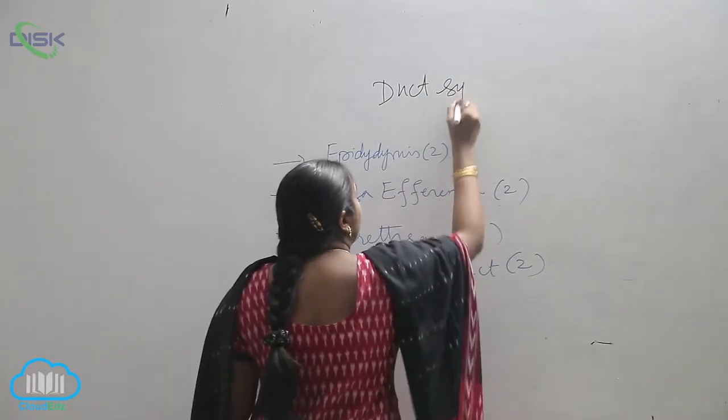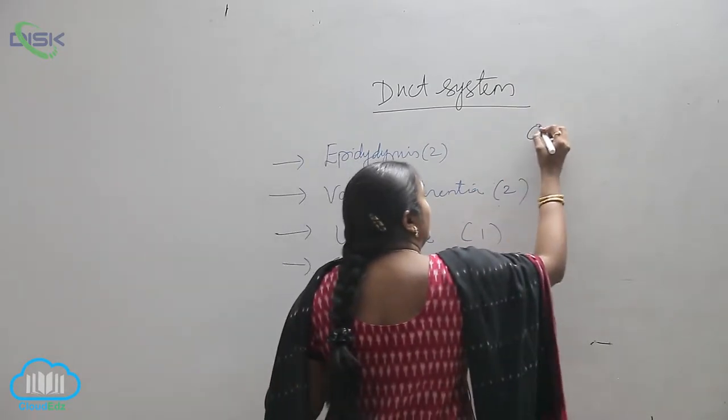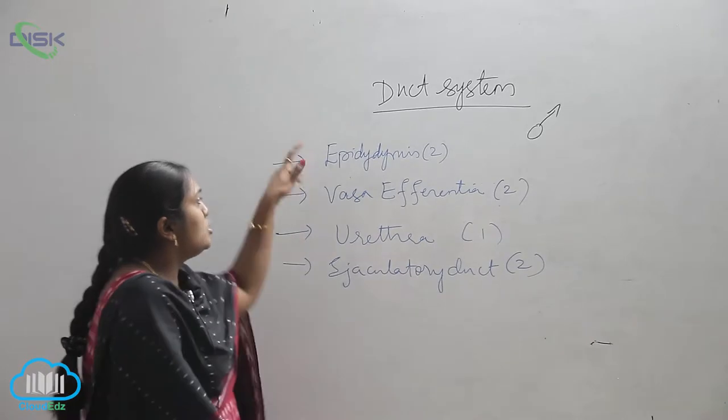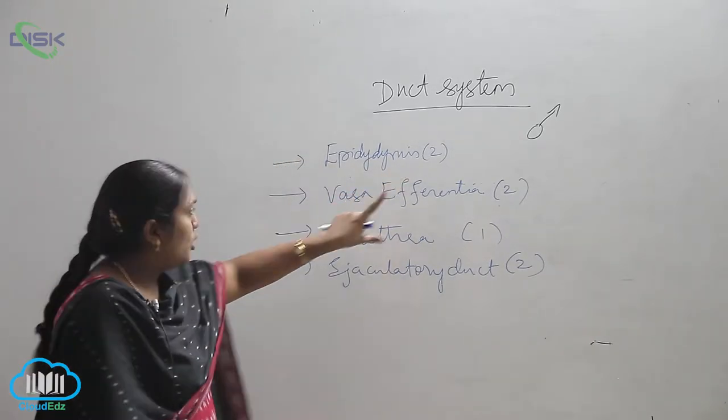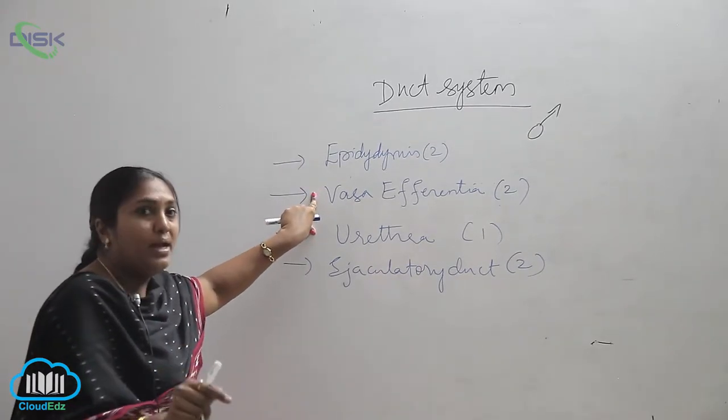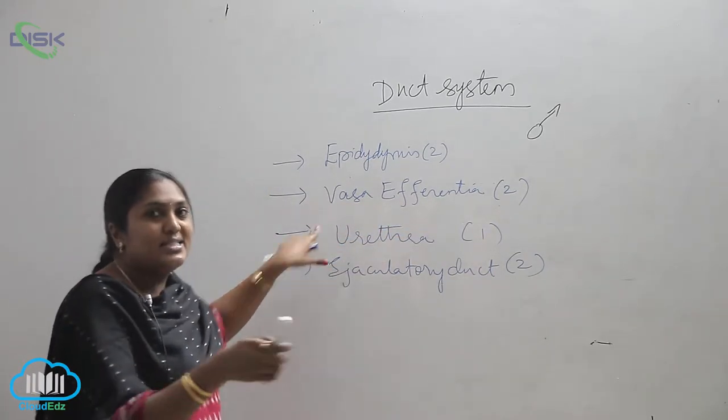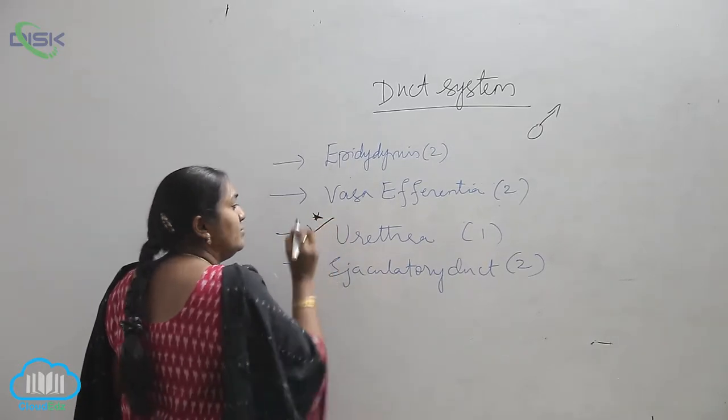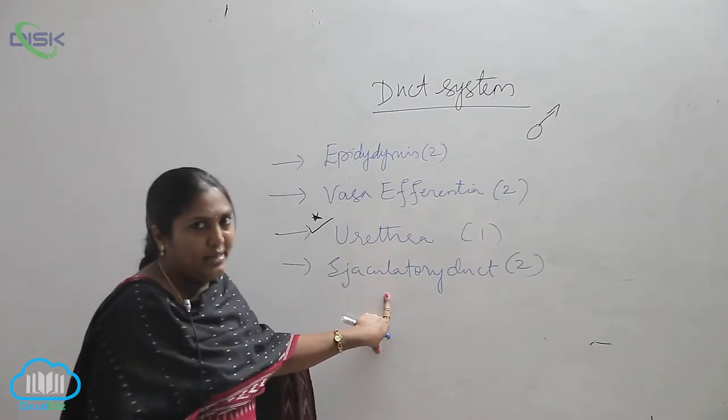The duct system plays a very important role in the male reproductive system. It consists of epididymis, which is paired, two in number; vasa efferentia, again paired, two in number; urethra, which is single, only one in number; and the ejaculatory duct, again paired, two in number.